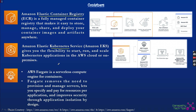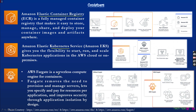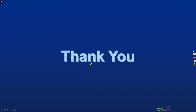AWS Fargate is the serverless compute deployment option for containers. Previously, containers were run on top of EC2 instances. Fargate removes the need to provision and manage servers — without Fargate you'd need to build the container image, define EC2 instances, provision compute and memory manually. With Fargate, you just build the container image, define the required compute and memory, and everything is deployed automatically. Most organizations are now making use of AWS Fargate.